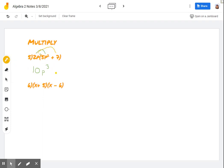Now we also need to distribute our 2p to the 7. So 2p times 7 is 14p. And that's our final answer.